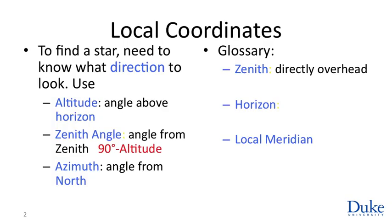Summarizing again our coordinates in our local view, we measure the position of a star by giving either its altitude above the horizon or its angular distance from the zenith. These two add up to 90 degrees, and its azimuth, the angle from north measuring east from zero to 360 degrees.